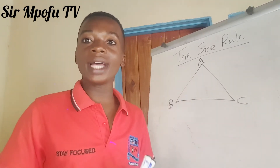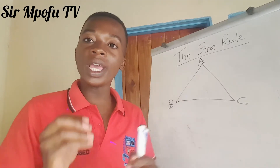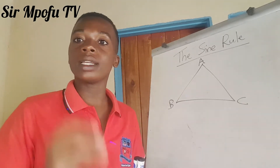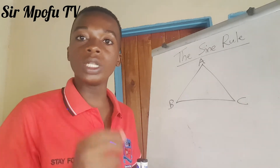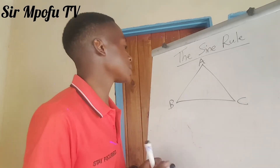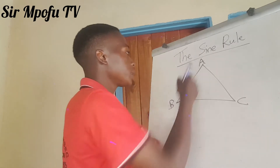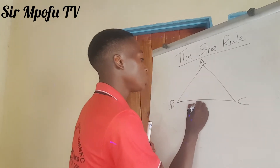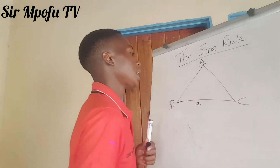The fortunate part is that the sine rule is applicable on any triangle, given that we have all the necessary information that we need to apply the sine rule. So if this is angle A, this side becomes side A.